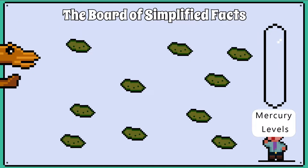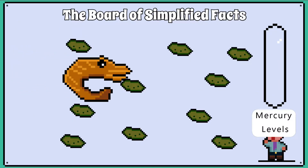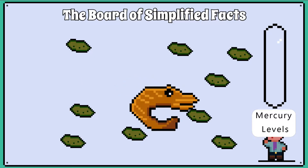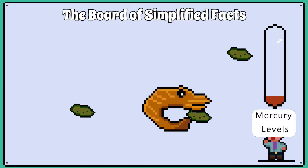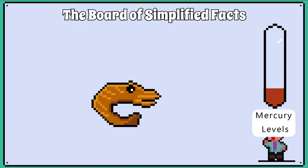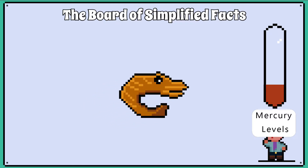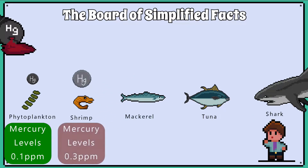Shrimp then consume the phytoplankton, and as one shrimp will consume many phytoplankton, those shrimps will accumulate or build up more mercury in their tissues. So one shrimp now contains mercury levels of 0.3 parts per million.